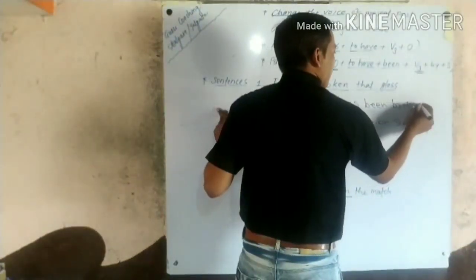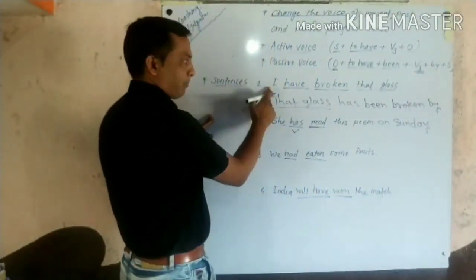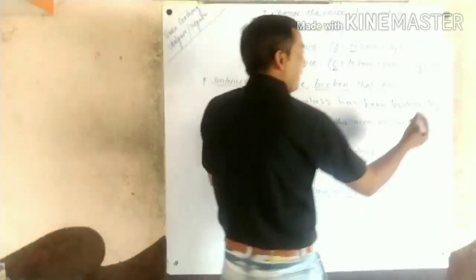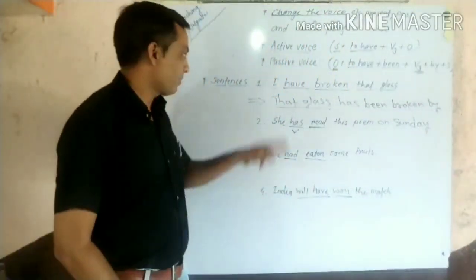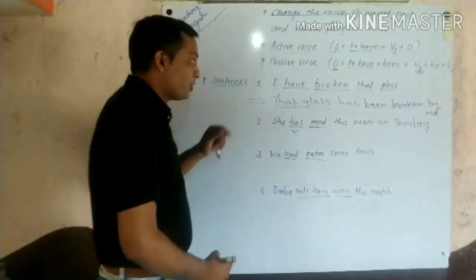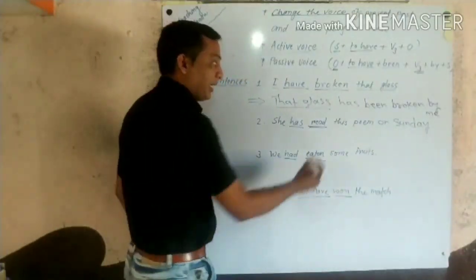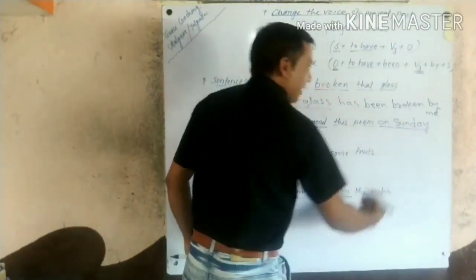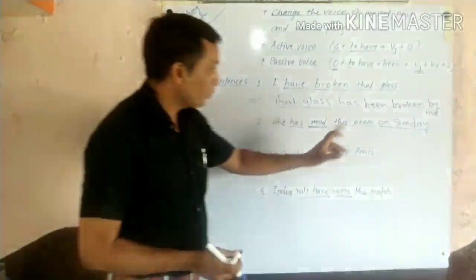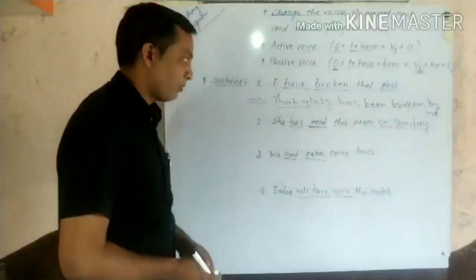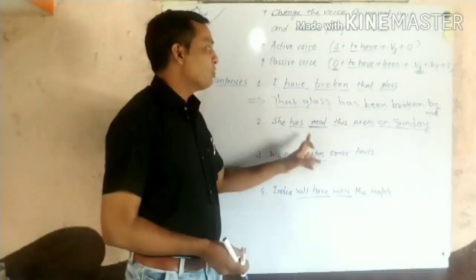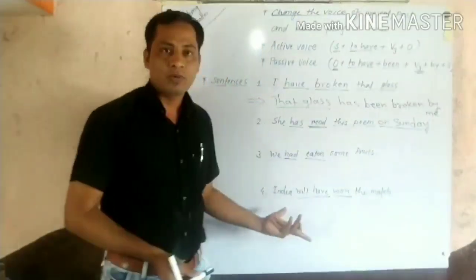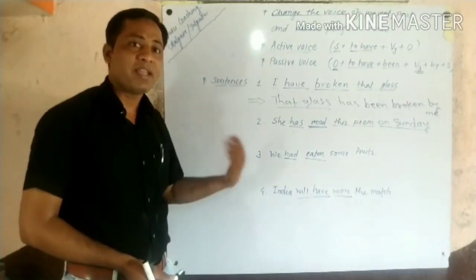If the subject is a pronoun, then convert it into the objective case. For example, if the subject is a pronoun, write its objective case form. If the subject contains a prepositional object — for example, a preposition followed by a noun — you cannot begin your passive sentence with that prepositional object. Begin your sentence with the direct object, not the prepositional object.